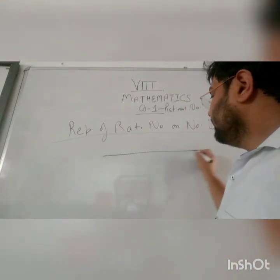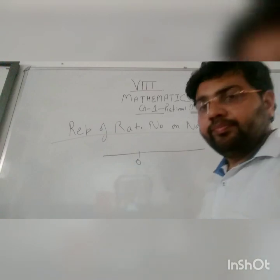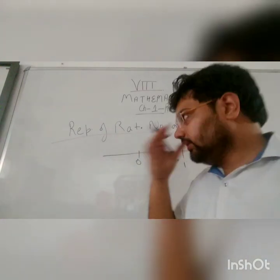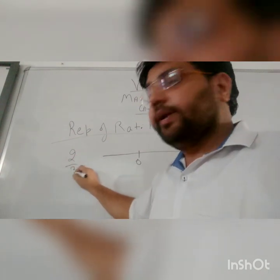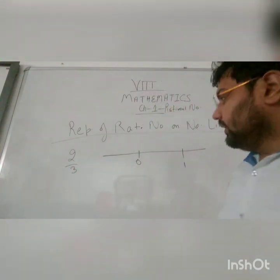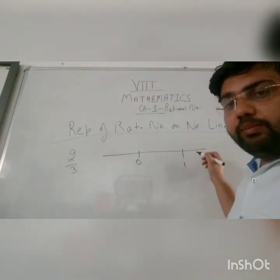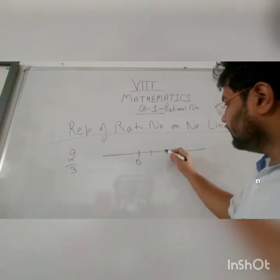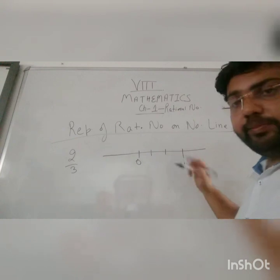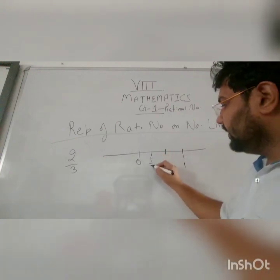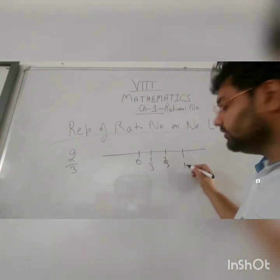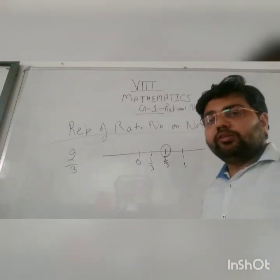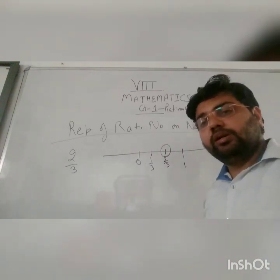Draw the number line. Mark 0 and 1. Since 2 by 3 is less than 1, as the numerator is less than the denominator, make 3 equal parts between 0 and 1. The first part will be 1 by 3, the second part will be 2 by 3, and the third part is 3 by 3, which is 1. So the second mark is our 2 by 3. That is how we represent a rational number on the number line.